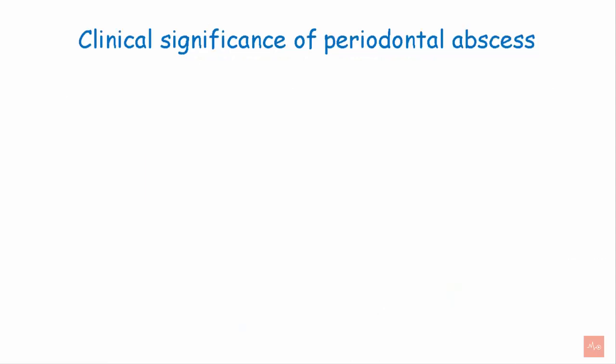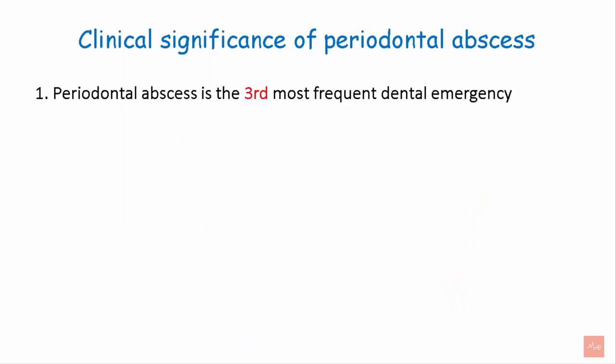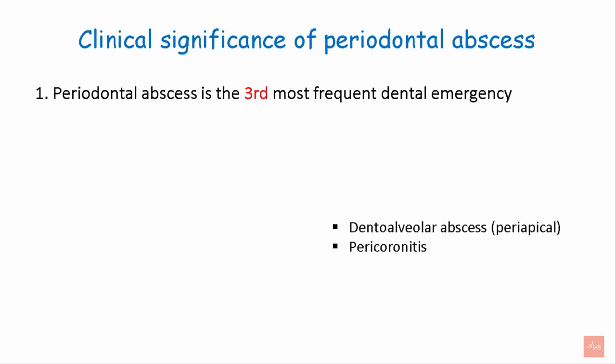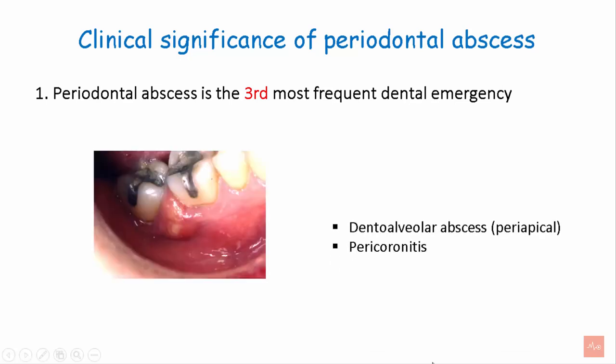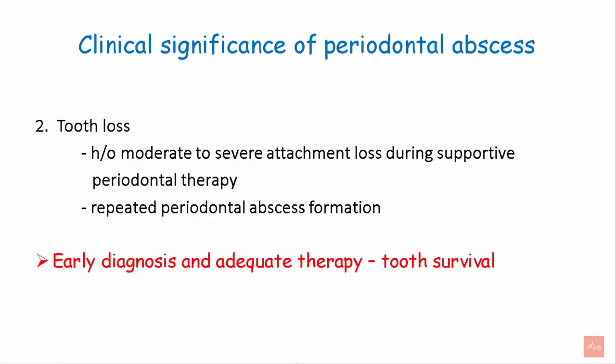It is important to understand the clinical significance of periodontal abscesses. It is the third most frequent dental emergency after the dental alveolar or periapical abscess and pericoronitis. Teeth with moderate to severe attachment loss during supportive periodontal therapy and teeth with repeated periodontal abscess formation have poor prognosis, ultimately leading to tooth loss. Early diagnosis and adequate therapy is important for tooth survival.